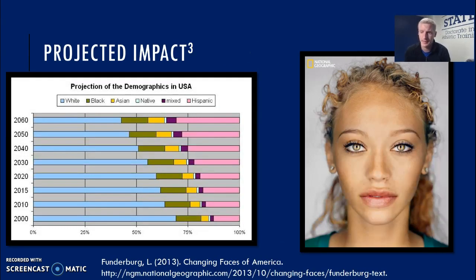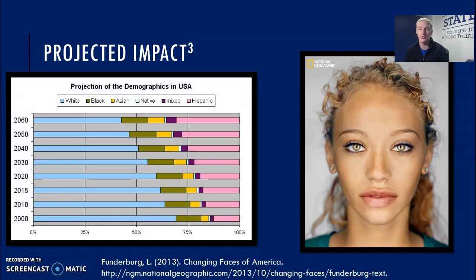The projected impact is that millennials, who number 83.1 million people, have now surpassed baby boomers at 75 million and are the most diverse generation in history. The projected future face of America is not what we may see currently. Four states — Hawaii, California, New Mexico, and Texas — along with Washington, D.C., are now majority-minority, meaning that the white population is equal to or less than the other subgroups. Nevada, which has a 48.5% minority population, is likely to be next.